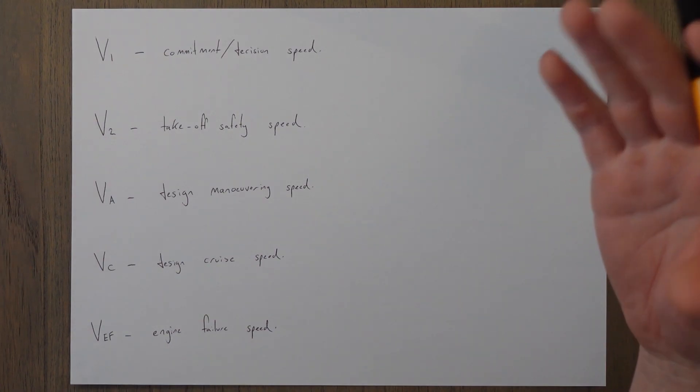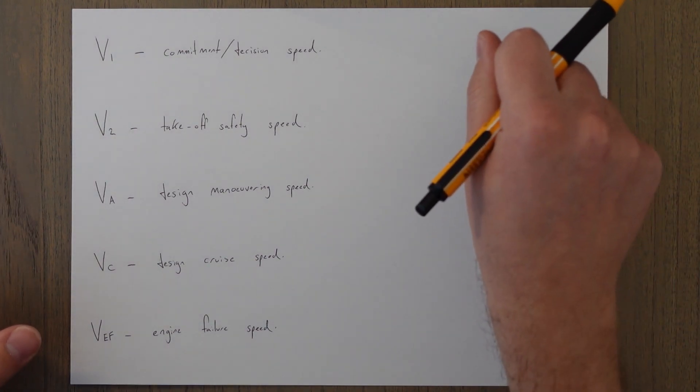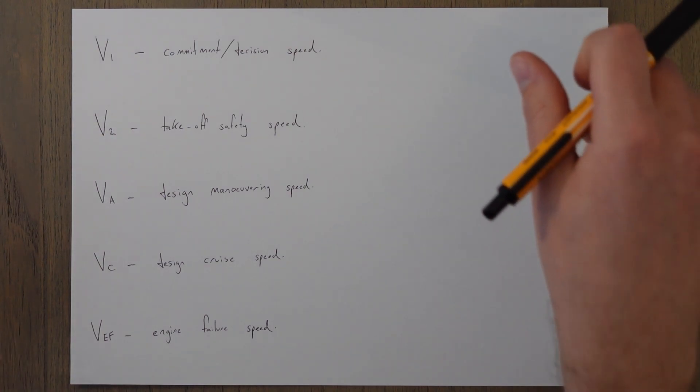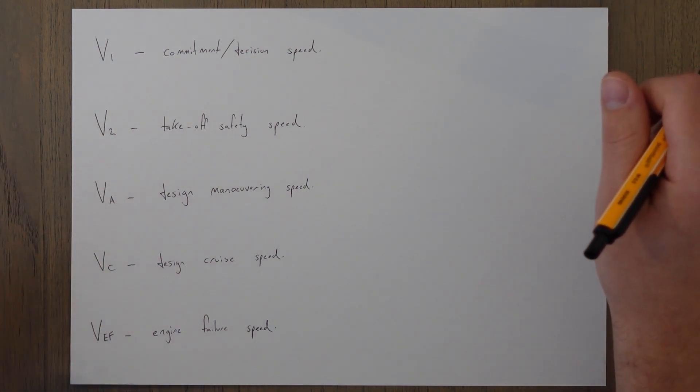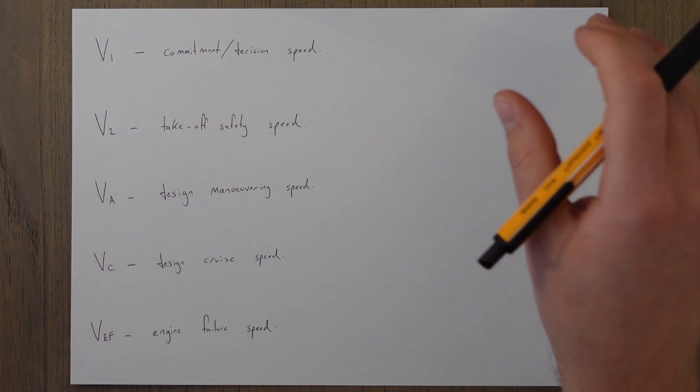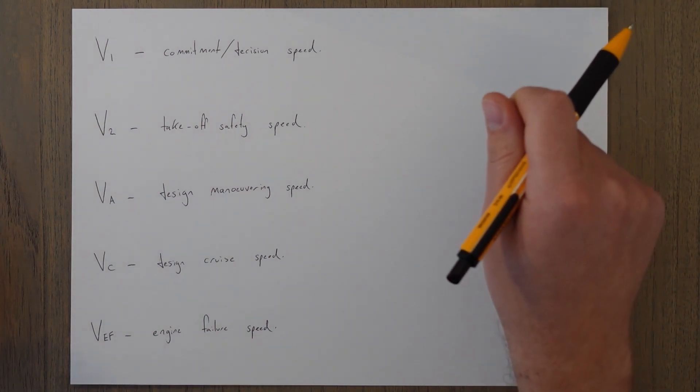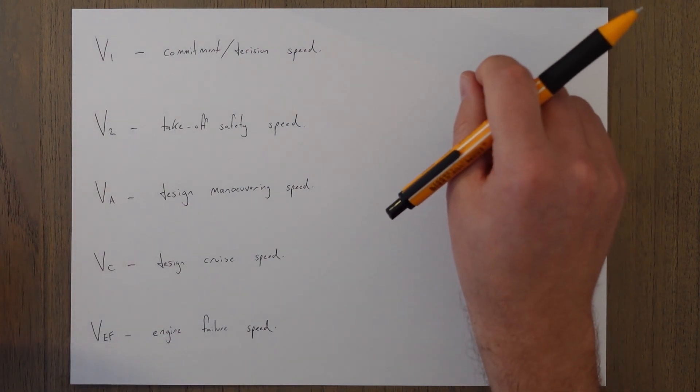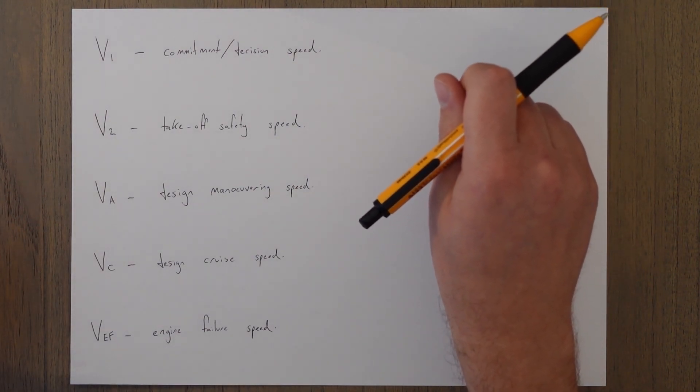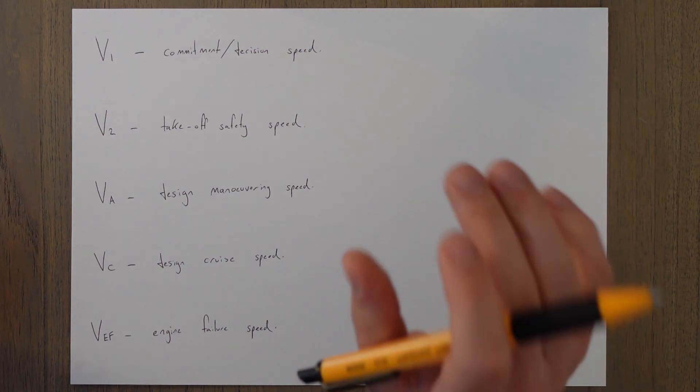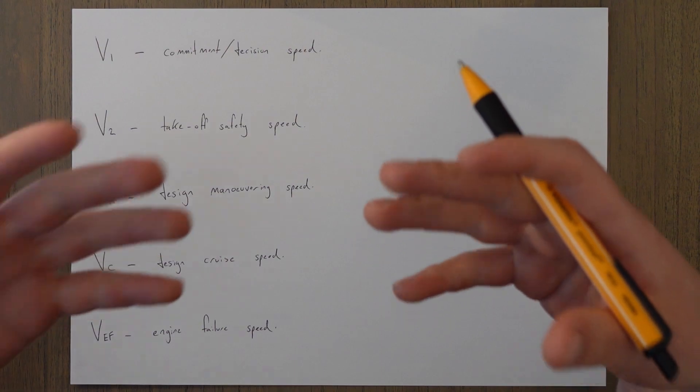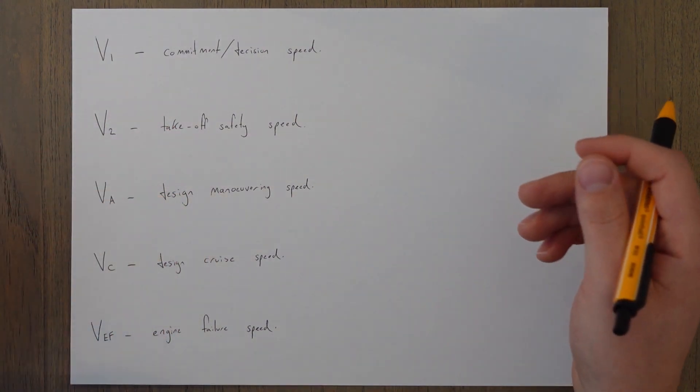This will normally be called by the pilot monitoring or the pilot not flying during the takeoff roll. In my company and I'm sure many others, the captain will hold or hover over the first officer's hands during the takeoff roll and ready to reject the takeoff until reaching V1, and at V1 this certain speed will be a point where the captain removes their hands and the first officer also removes their hands so that we are no longer tempted into rejecting the takeoff and we are committing to taking this plane into the air.